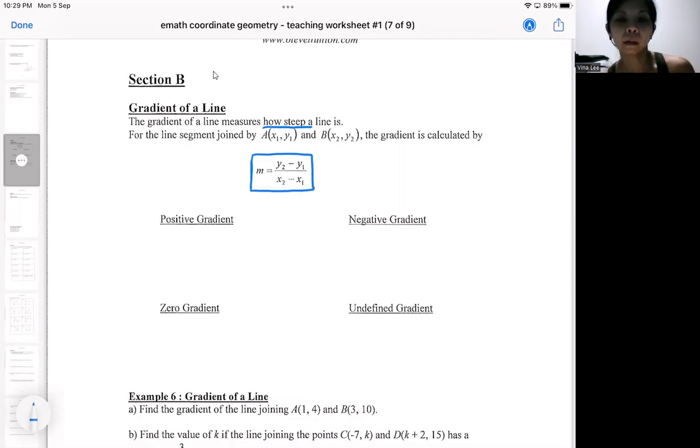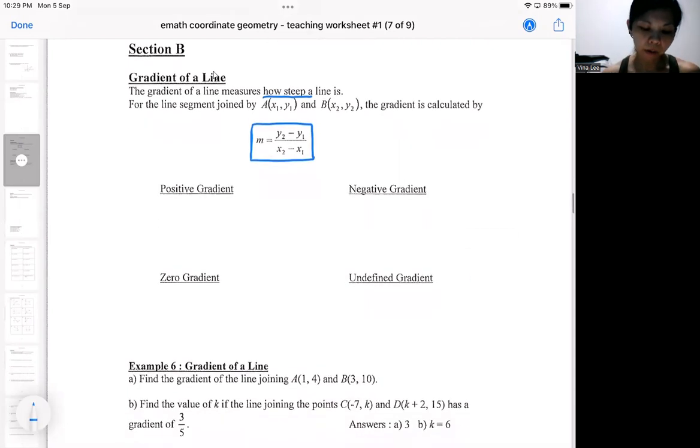By looking at the value of a gradient, we can tell the direction of a straight line. There are a few categories which you need to know. If you've got positive gradient, you should be looking at a line that is going upwards. If you've got negative gradient, it should be a line that's coming down. If you've got a zero gradient, that's a horizontal line. Undefined gradient usually belongs to vertical line. These are the few categories of gradient that you need to know.